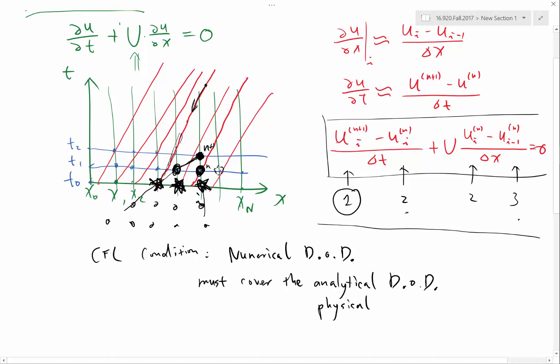So this is computed by this value and this value. And you can use the same logic, forward and forward and forward. So this is going to be computed using these four points and so on. So every single point that lies in this triangle, if I change the value of the solution there, it is going to change the value of the solution at this point.